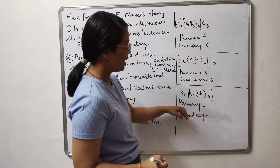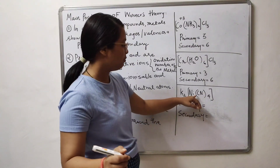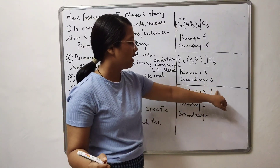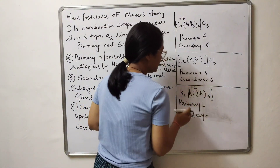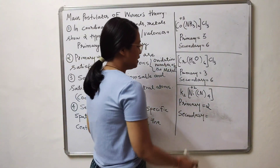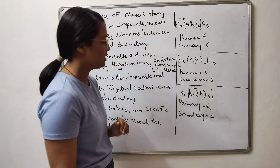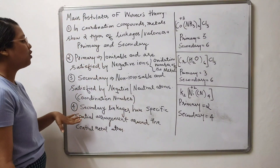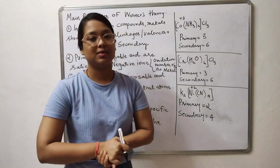In the third example, nickel will have an oxidation state of +2, balanced by a −2 overall charge from the cyanide ligands. So nickel has an oxidation state of +2, meaning the primary valency is 2. It is a tetracyanide complex, so the secondary valency — the coordination number — is 4. This was how to calculate the primary and secondary valencies in coordination compounds.